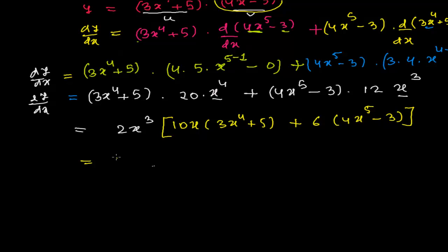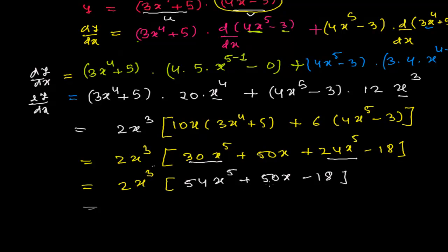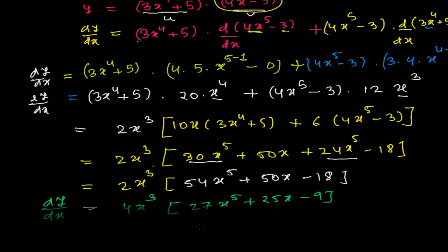Now multiplying out: 10x times 3x to the power 4 gives 30x to the power 5, and 10x times 5 gives 50x. Then 6 times 4x to the power 5 gives 24x to the power 5, and 6 times minus 3 gives minus 18. Combining like terms: 30x to the power 5 plus 24x to the power 5 equals 54x to the power 5. Taking 2 common again from 54, 50, and 18 gives: 4x cubed times (27x to the power 5 plus 25x minus 9). This is our derivative.